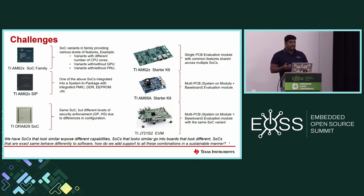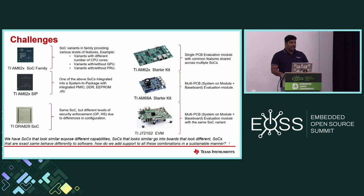Some devices, based on permanent configuration, don't need signed or encrypted images to work, while others do require signed and encrypted images. When you look from a high-level perspective these are the exact same devices, but at the bootloader level you need completely different signed images to make these two devices work. How do you add support without duplicating the effort?